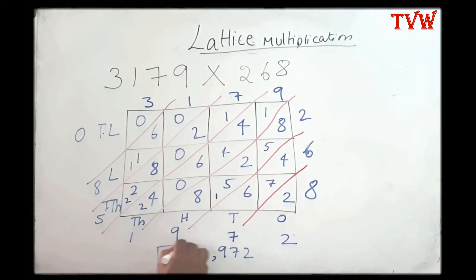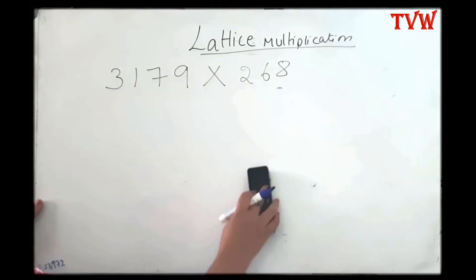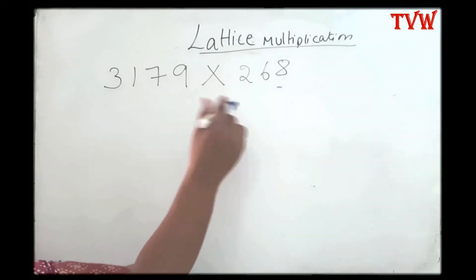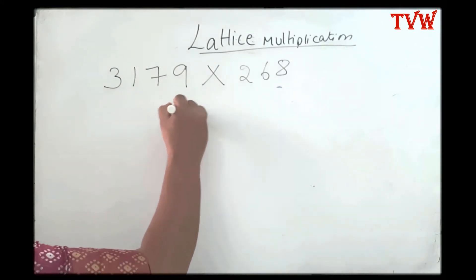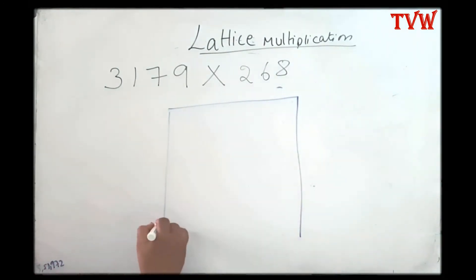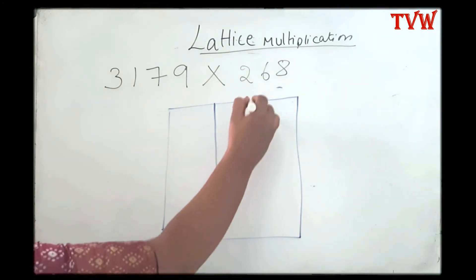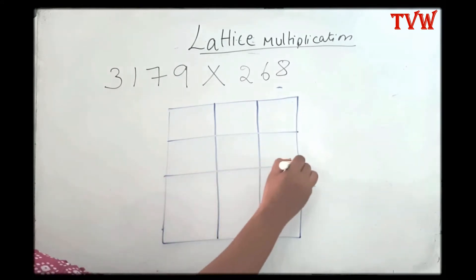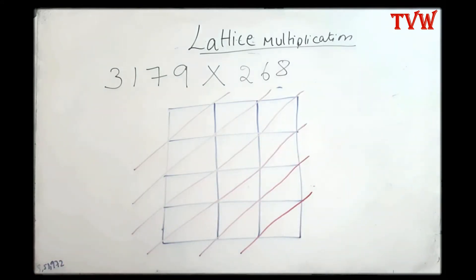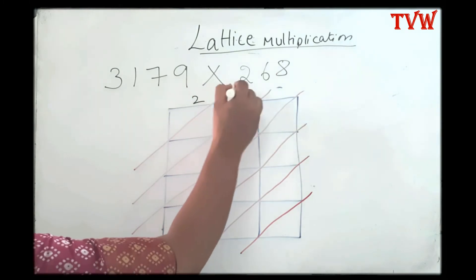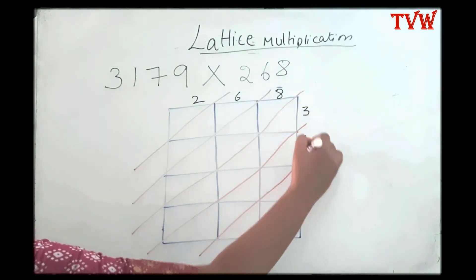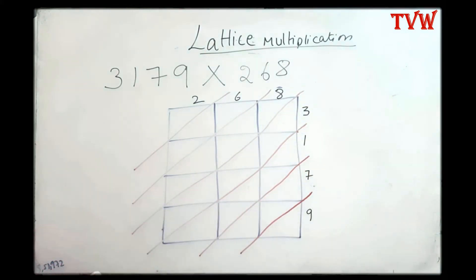Now let us change the number of columns and rows. Instead of four columns, this time I am going to have three columns and four rows. The three-digit number, two hundred and sixty-eight, goes on the top, and the four-digit number, three thousand one hundred and seventy-nine, goes on the side.